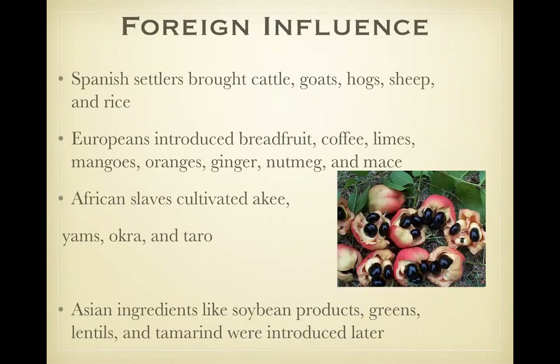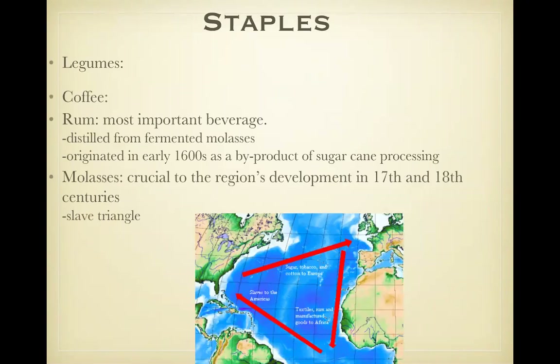Food influences. Spanish settlers brought many things, including many animals for domestication. Spanish settlers were very happy with all the fruits and vegetables in the islands, and Europeans introduced many things to trade. African slaves cultivated something really interesting called ackee — that kind of fruit-looking thing pictured. Ackee is an apple-sized fruit that is banned in the U.S. because most parts of the ackee fruit contain a chemical that can actually lower your blood sugar to a fatal level.